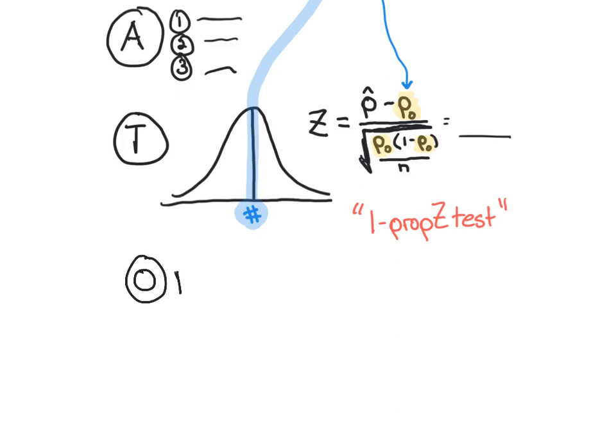The one-prop Z test also gets you the O part of PHANTOMS, which is obtaining a p-value. It will even draw that for you. The one-prop Z test really does all that work for you — your job is just to fill it in and make it look like you did it by hand. For those of you taking the AP exam, always fake it, put everything out there, and let your calculator do the work.